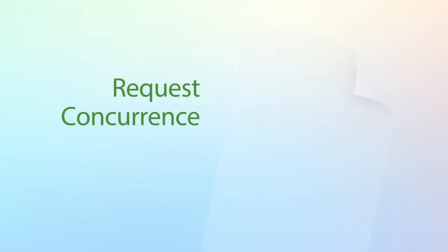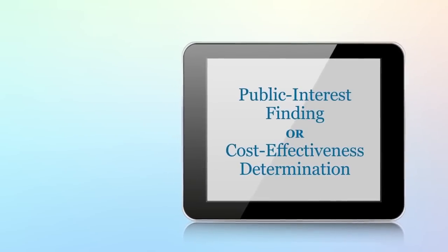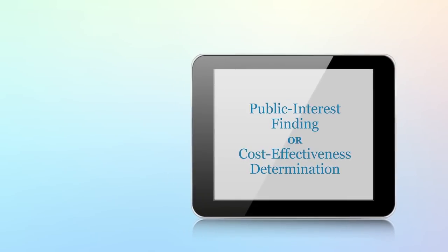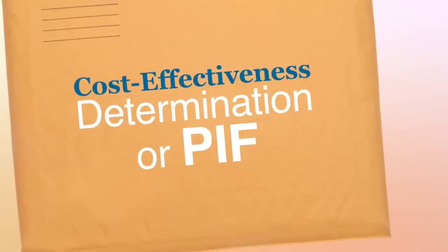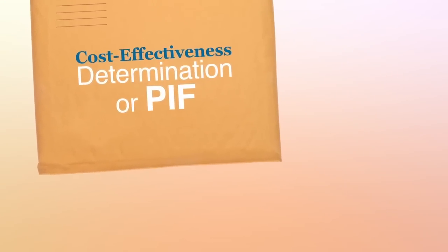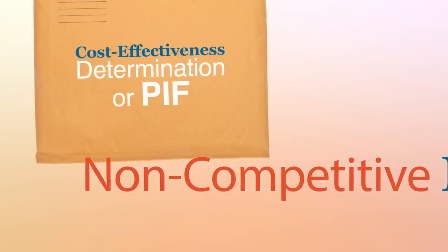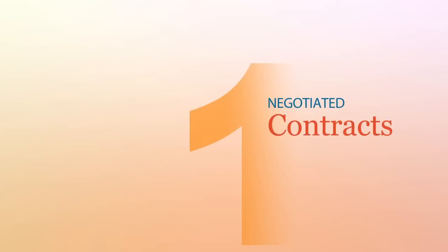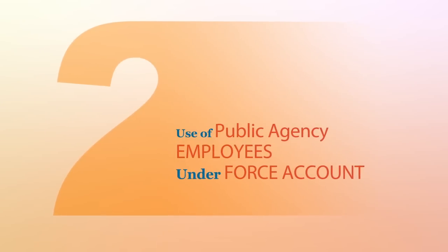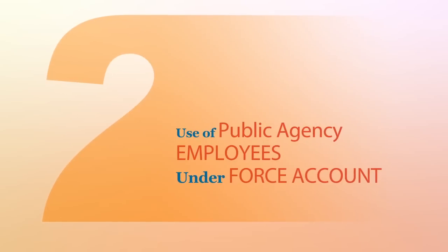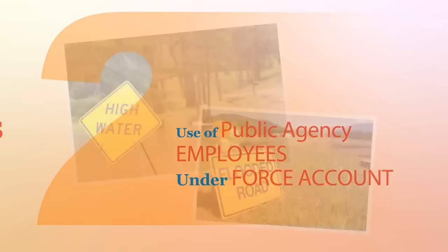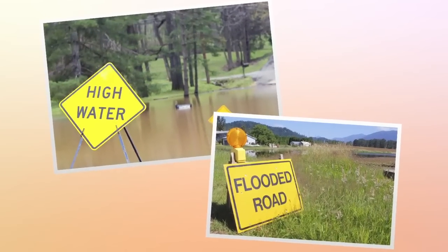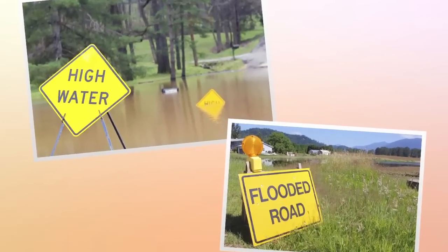You will need to prepare a document to request concurrence by the oversight agency when it is indicated that a public interest finding or cost-effectiveness determination is justified within the Federal-aid regulation. When should you use a cost-effectiveness determination or public interest finding? You must submit a request for a cost-effectiveness determination to use non-competitive methods of construction for a project. Negotiated contracts or use of public agency employees under force account procedures are two examples of non-competitive work procurement. Emergency work within the Federal-aid emergency relief program has a regulatory exception for determining cost-effectiveness.